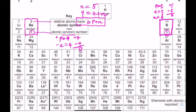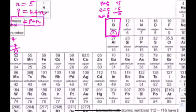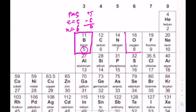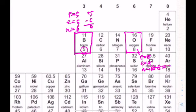For oxygen, the atomic number is 8, so proton number = 8 and electron number = 8. The neutron number = 16 − 8 = 8.